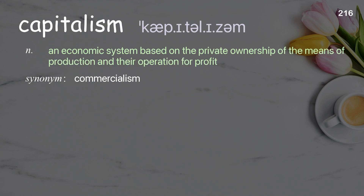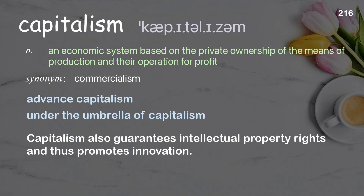Capitalism: an economic system based on the private ownership of the means of production and their operation for profit. Examples: advance capitalism, under the umbrella of capitalism. Capitalism also guarantees intellectual property rights and thus promotes innovation.